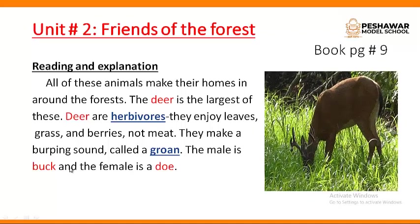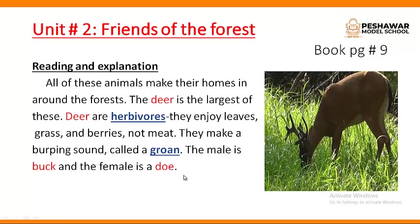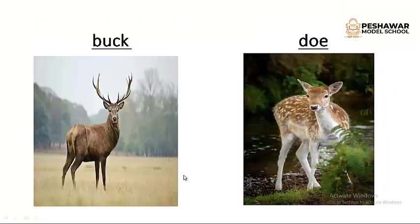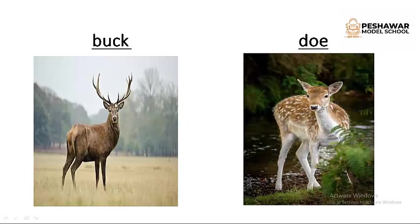The male deer is called a buck and the female is called a doe. You can see here pictures of the male deer and female deer. The male deer is called buck or stag, and this is the female deer called doe. You can see the differences in the pictures — the male deer have antlers, while the female deer have just ears and no antlers.